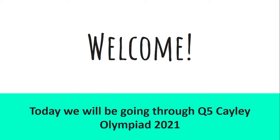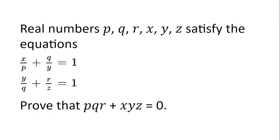Welcome. Today we will be going through question 5 of the Cayley Olympiad 2021. Real numbers P, Q, R, X, Y, Z satisfy the equations X divided by P plus Q divided by Y equals 1, and Y divided by Q plus R divided by Z equals 1. Prove that PQR plus XYZ is equal to 0.